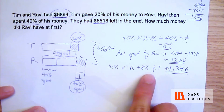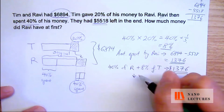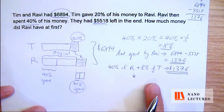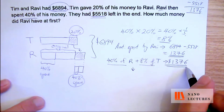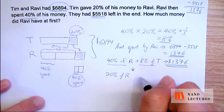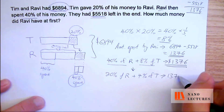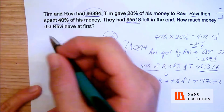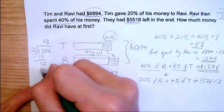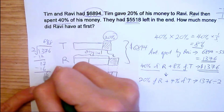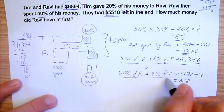I'm talking about the original amounts. Now I want to find 100% of either one of them. I'm going to use what we call logic reasoning. If 40% of Ravi plus 8% of Tim equals $1,376, then 20% of Ravi plus 4% of Tim is just half of that — which is 1,376 divided by 2, giving us $688.